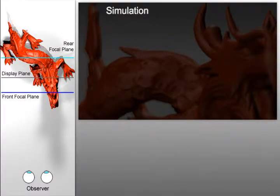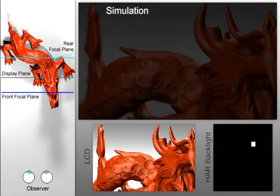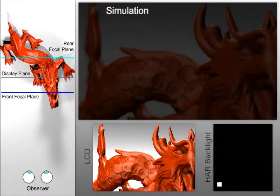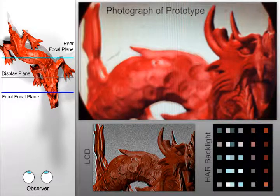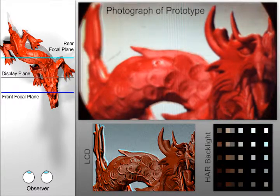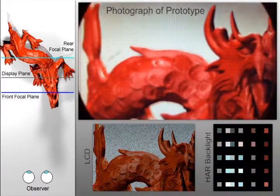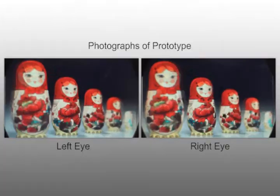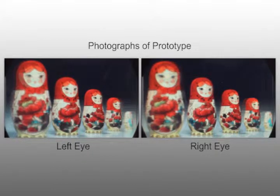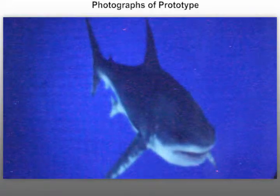Compared to conventional time-sequential approaches to driving such displays, our method allows the display of brighter images and requires lower display refresh rates through the use of compressive display modes. Furthermore, our optical configuration supports multiple stacked attenuation layers for which no heuristic solution exists. We demonstrate the compressibility of natural light fields with both binocular disparity and accommodation, as well as motion parallax over a wide field of view.